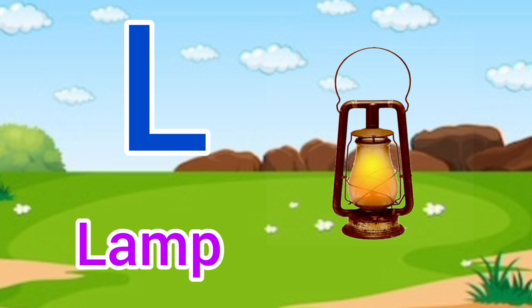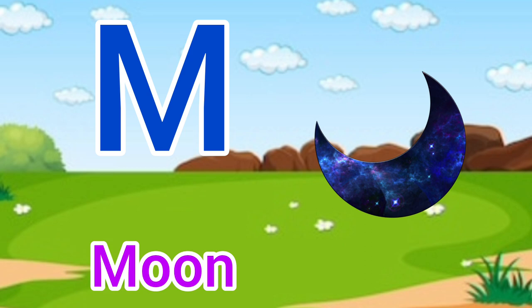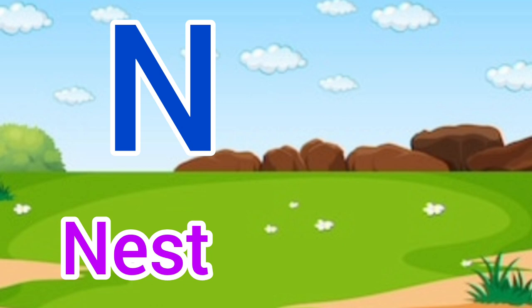M for moon, moon means chaad. N for nest, nest means ghosla.